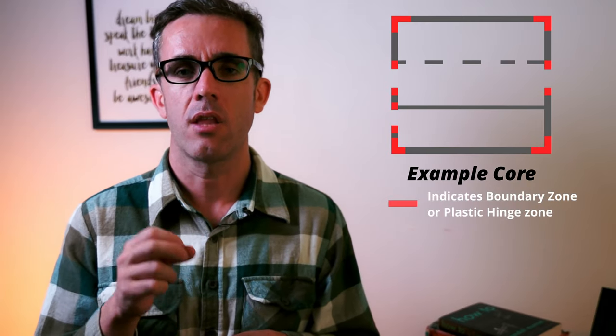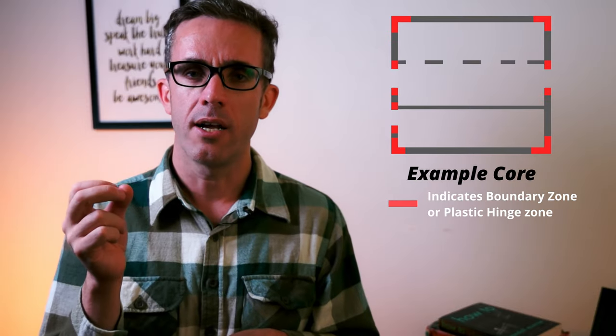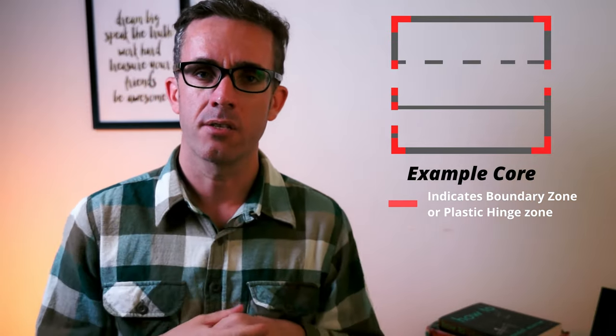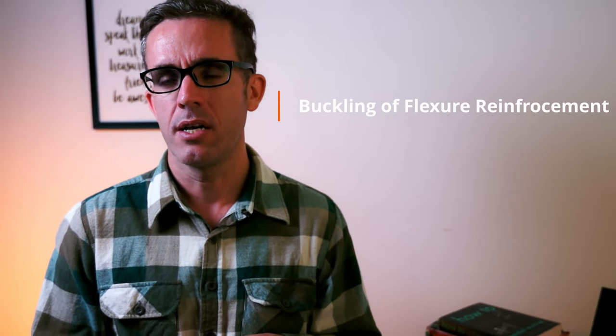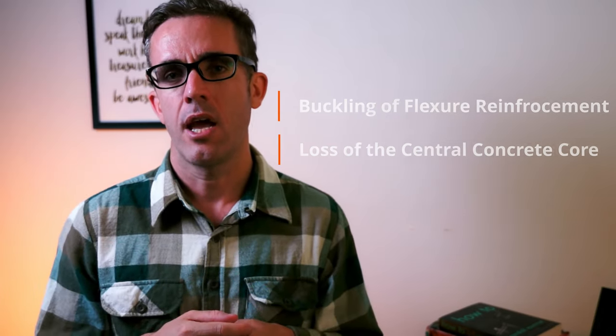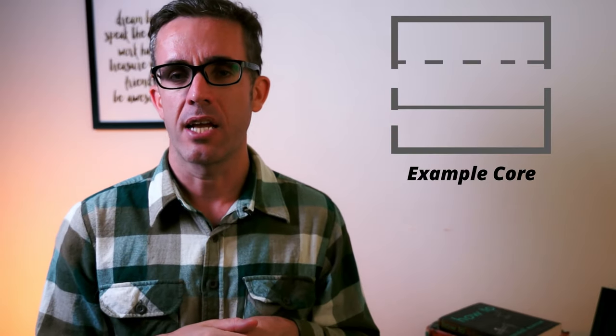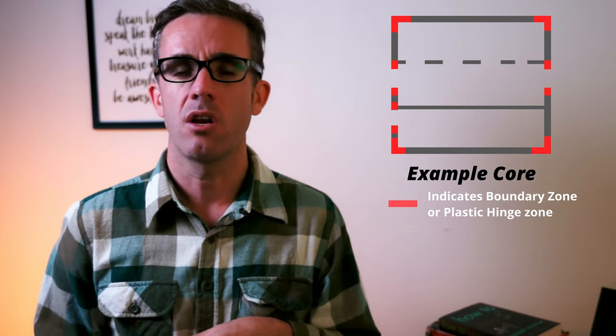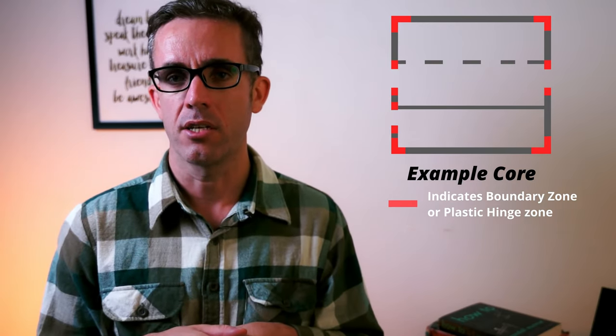It's important to go back and ensure your results are correct by checking through a more simplified method. As noted at the start, most buildings will suffer some sort of flexural yielding during a design earthquake event. These zones are known as boundary zones or potential plastic hinge zones. To allow flexural yielding to occur in these zones, significant confinement of these peak areas is required. Without effective confinement, failure mechanisms such as buckling of vertical flexural bars or disintegration of the central core can cause a fatal collapse.